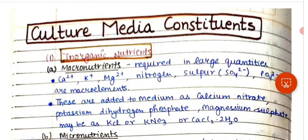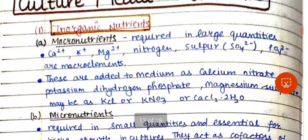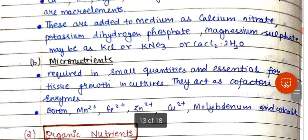In this video we are going to discuss the culture media components of plant tissue culture. The first component is inorganic nutrients: macronutrients and micronutrients. Macronutrients are required in large quantities in the media, such as calcium, potassium, magnesium, nitrogen, and sulfur. These are added to the medium as calcium nitrate, potassium dihydrogen phosphate, magnesium sulfate, KCl, KNO3, or CaCl2 — that is, potassium chloride, potassium nitrate, or calcium chloride.